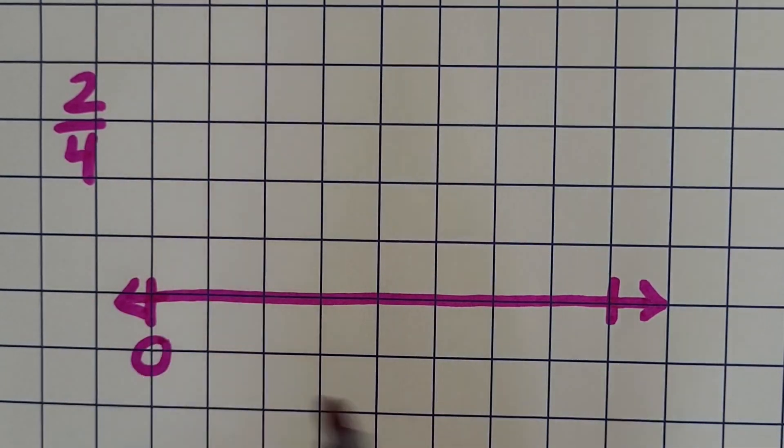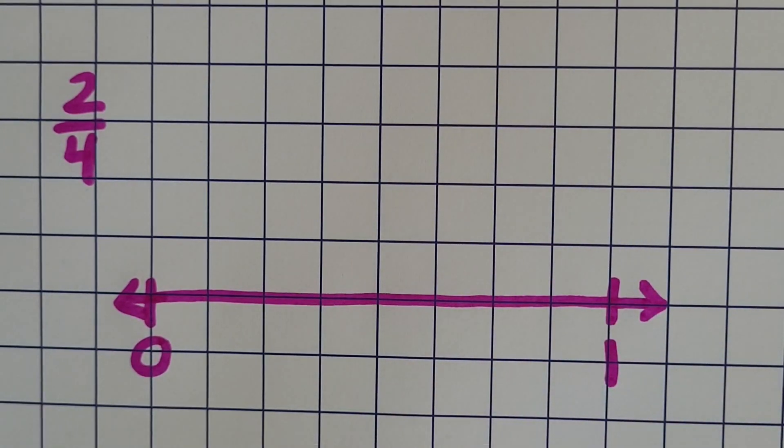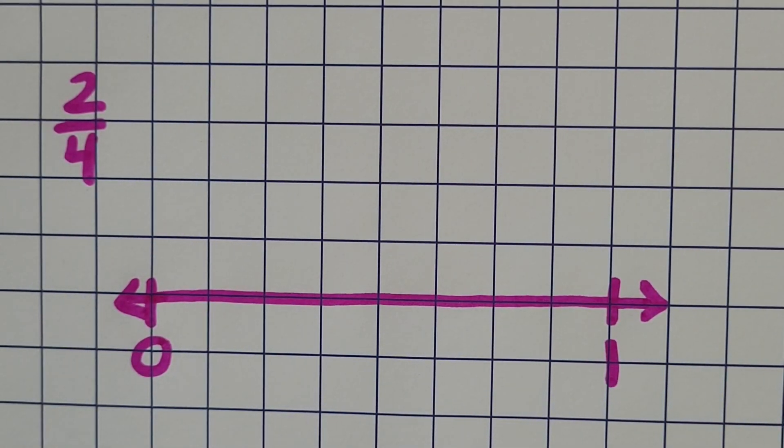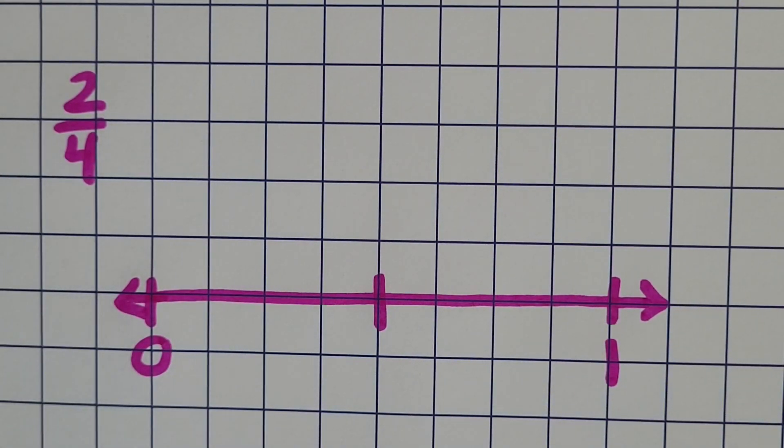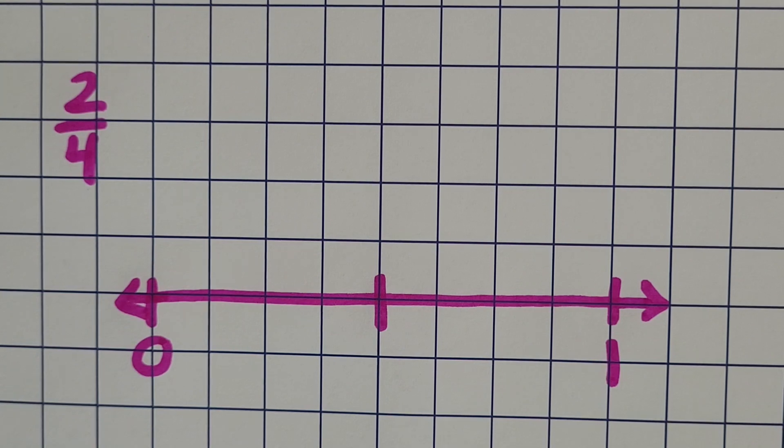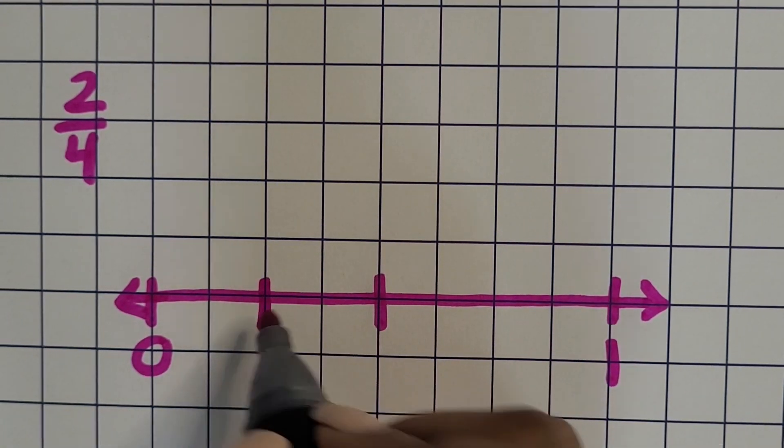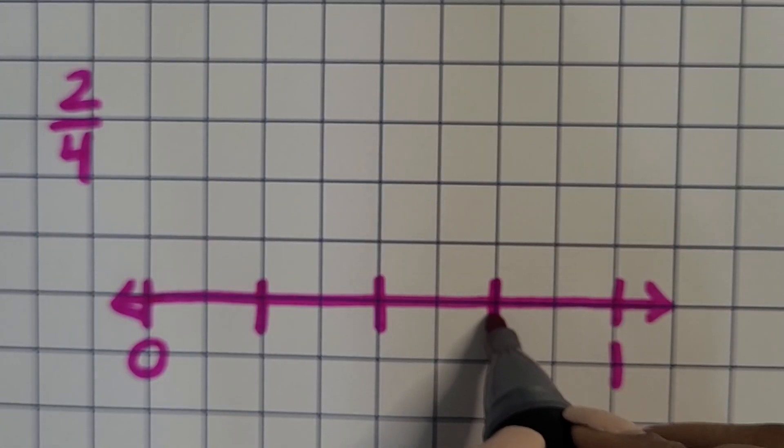Then we're going to partition the line into four equal sections because we want to represent fourths. You can do four spaces on the grid paper or just have four equal spaces. For this line, every two squares equals one-fourth.